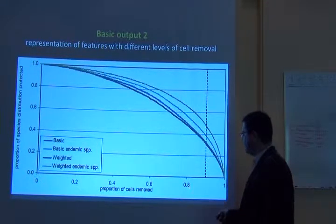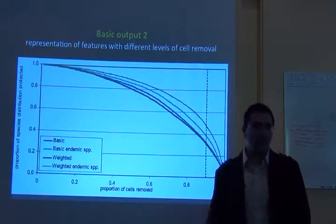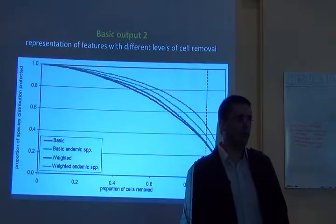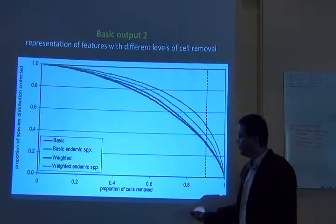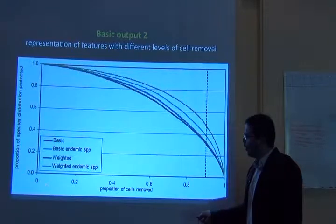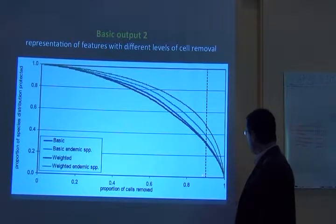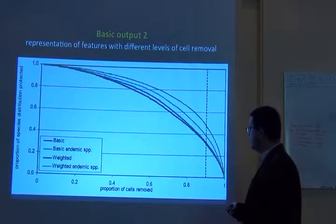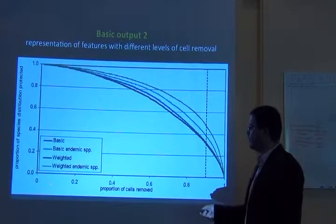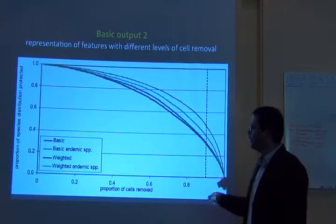Then you have the performance curve. The X-axis shows the proportional cells removed, because of the way the Zonation algorithm works — I'll get to this in a minute. Here you have all the landscape protected, and here you have none of the landscape protected, so we're losing habitat from left to right.